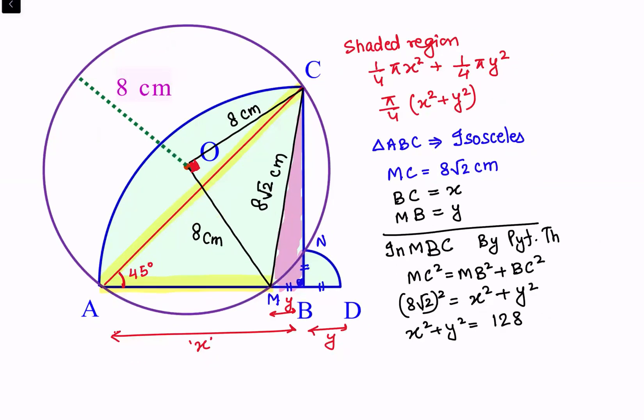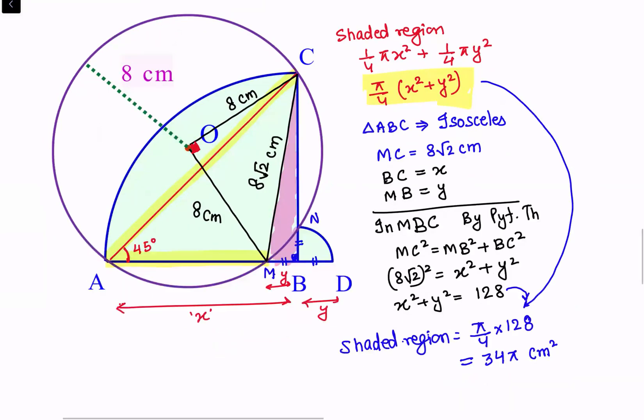Now we have to find the shaded region, which we derived earlier as π/4 (x² + y²). We'll substitute x² + y² = 128 from our calculation. So π/4 times 128 equals 32π square centimeters. That's the area of the shaded region, and that's our answer.